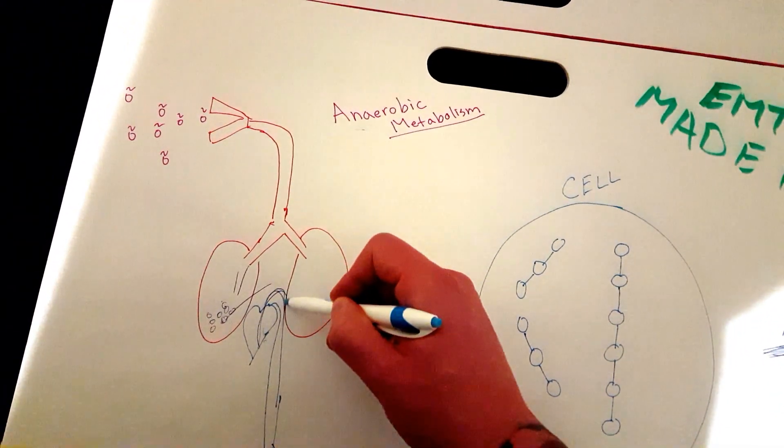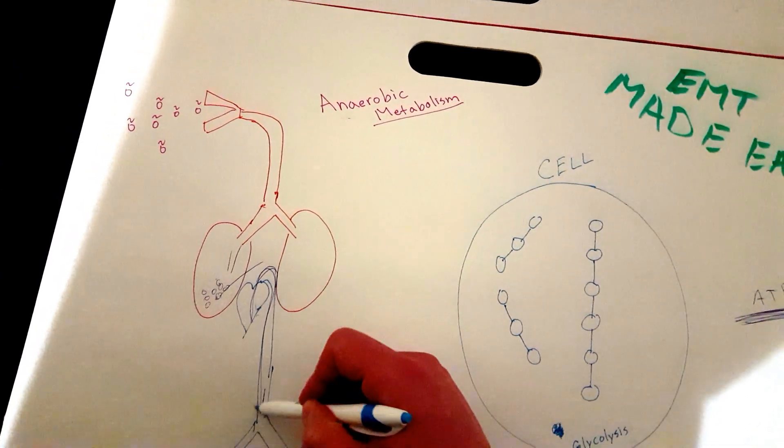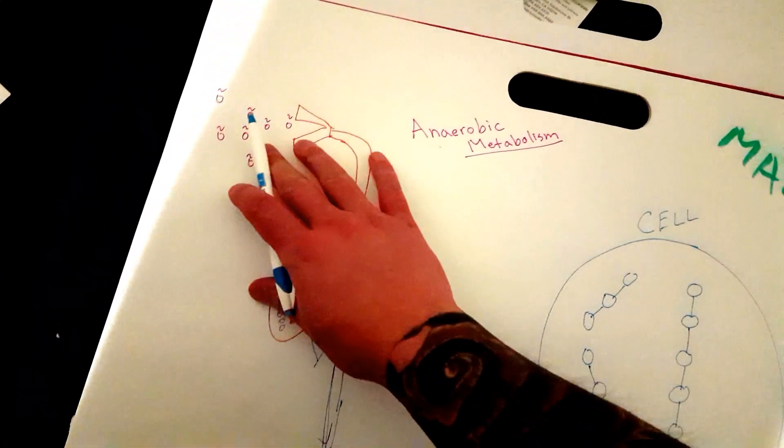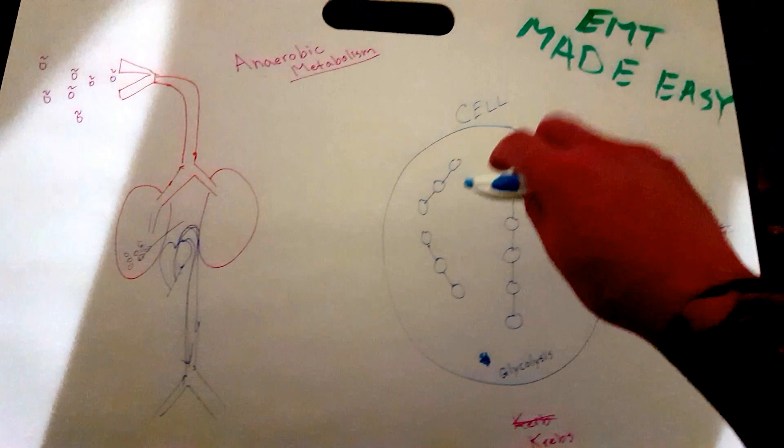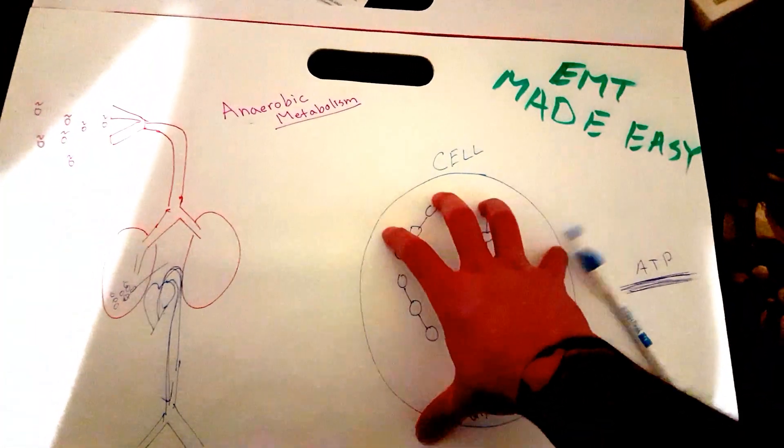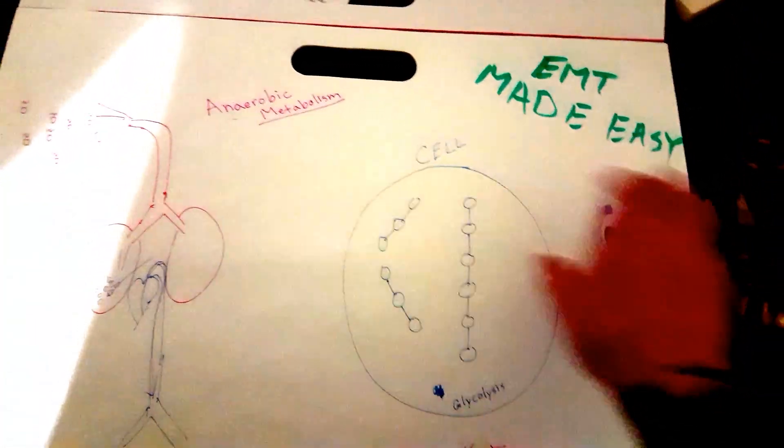I'm talking about the O2 right now. The left side of your heart will pump the O2 via the red blood cells to your body, and then it will make its way into the cells.